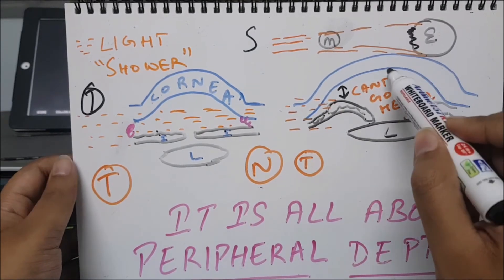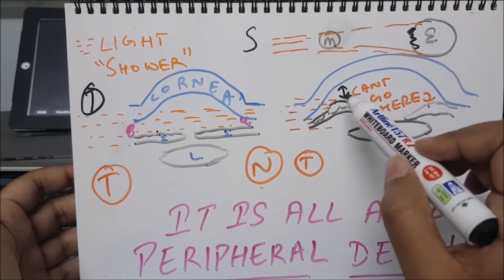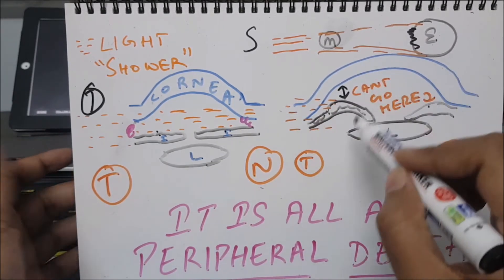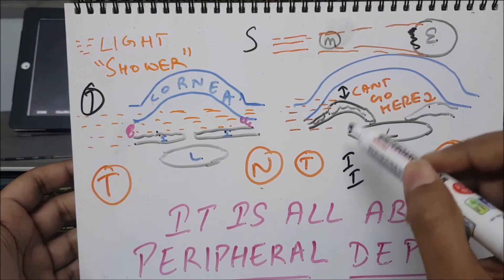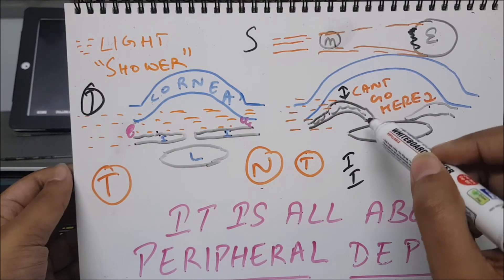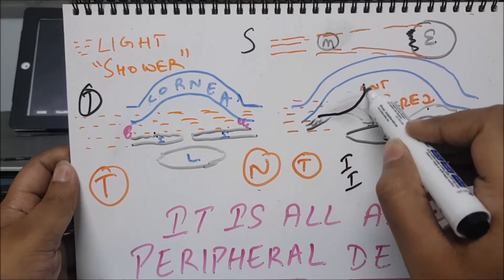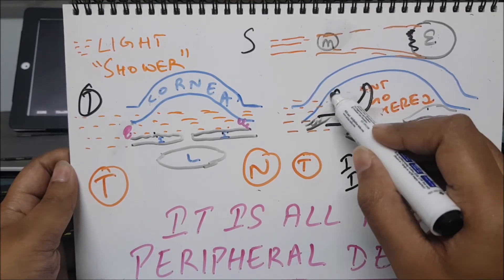The peripheral depth of anterior chamber is shallow here, not the central depth. So it depends what depth is shallow - it may be peripheral or it may be central. There are many pathologies like iridocyclitis which affect the eye in certain ways.